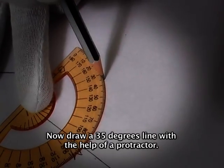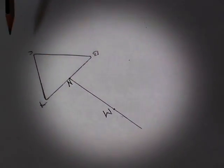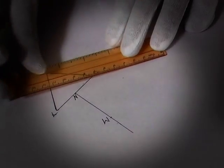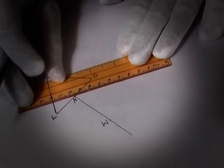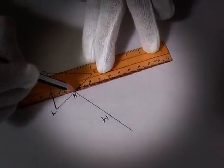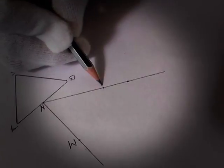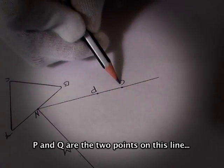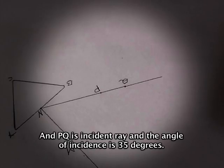Now draw a 35 degree line with the help of protractor. P and Q are the two points on this line, and PQ is the incident ray. The angle of incidence is 35 degrees.